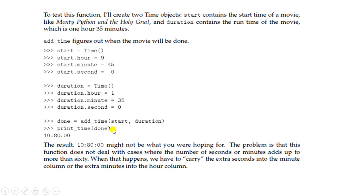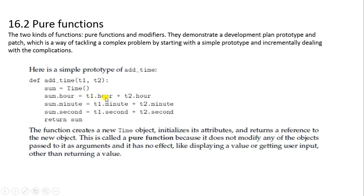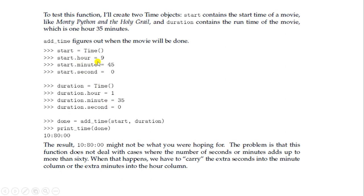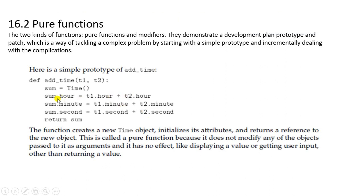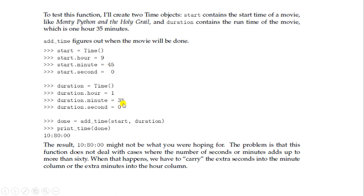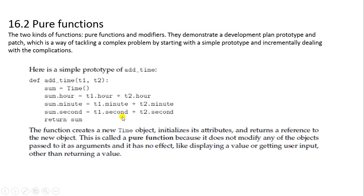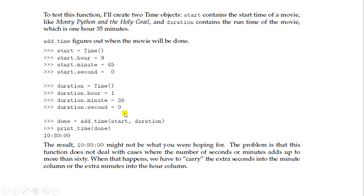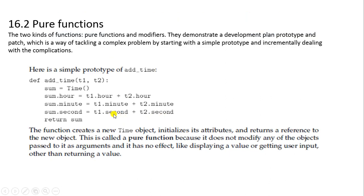For minutes: 45 plus 35 gives 80, stored in sum.minute. And 9 plus 1 gives 10 for the hour. The seconds: 0 plus 0 gives 0. But have you ever heard of 80 minutes? The result of 10 hours, 80 minutes, and 0 seconds is not what you are hoping for. The problem is that this function does not deal with cases where seconds or minutes add up to more than 60.